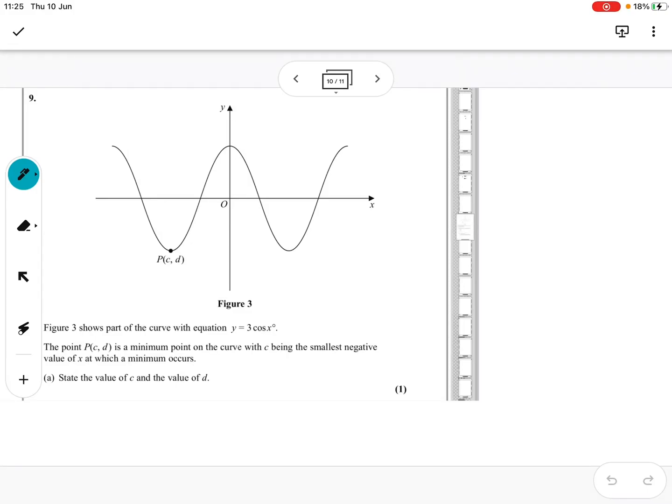Right, here we go. October 2020, the AS Paper 1, the pure paper. Question 9. So we're getting through this.